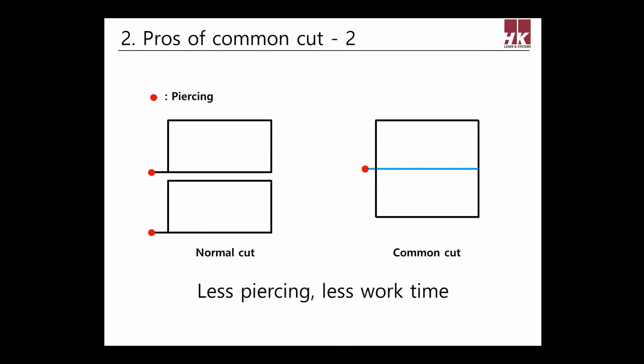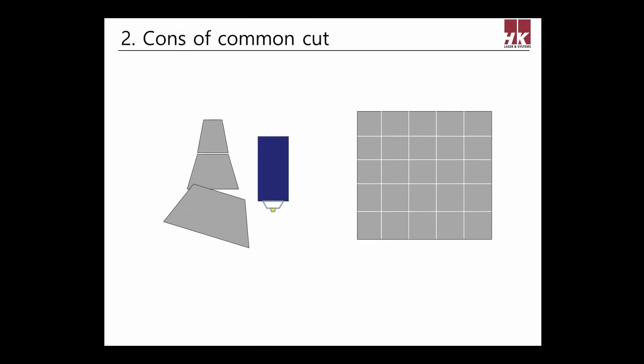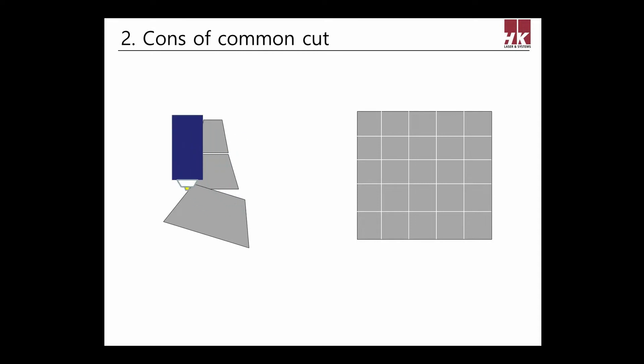But common cut is a special cutting method which also has cons. It not only causes dimensional error but also increases edge collision possibility.